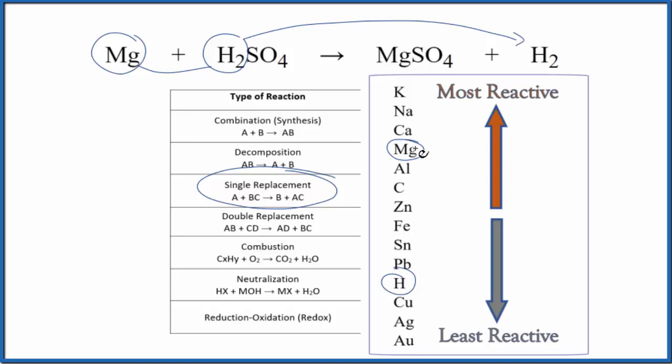We can see magnesium is closer to the top. Things on the top are more reactive. Since the magnesium is more reactive, it's reactive enough it can push out the hydrogen, and then it's bonded to the sulfate here. So this reaction does take place.